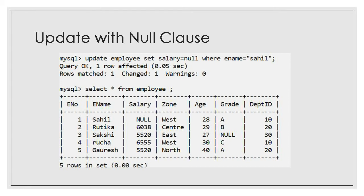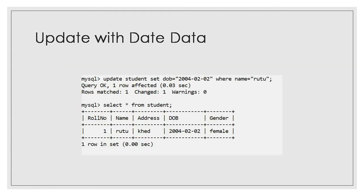GROUP BY functions — also called aggregate functions — include AVG, COUNT, MIN, MAX, SUM, and VARIANCE. We will emphasize MIN, MAX, AVG, and COUNT. The AVG function adds all values and divides by the total number of records to give you the average. The MAX function displays the maximum out of the given values.